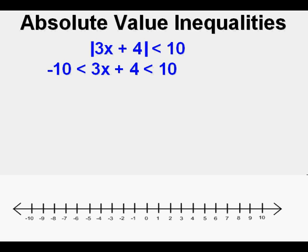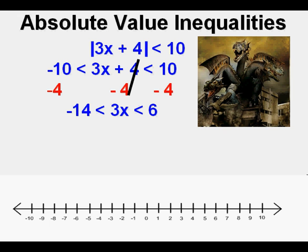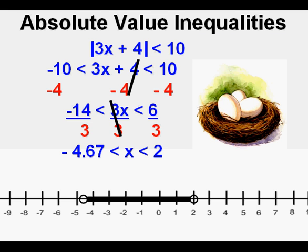From our solving compound inequalities lesson, we bring back the three-headed monster since we have three expressions in this inequality. We first subtract 4 from all expressions, cancel in the middle, and bring down what's left. Now we divide each expression by 3 and cancel in the middle. The negative 14 thirds on the left is negative 4.67, rounded to the nearest hundredth. We mark the boundary points — these are open points because of less than. Since it's less is NEST, we fill in, or nest, between the two boundary points. That is our graphed answer — we replace the three-headed monster with the nest.